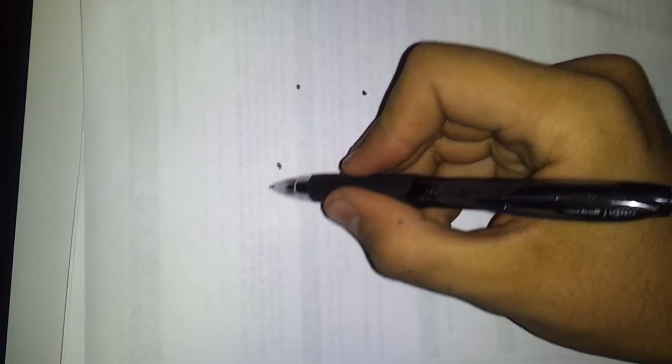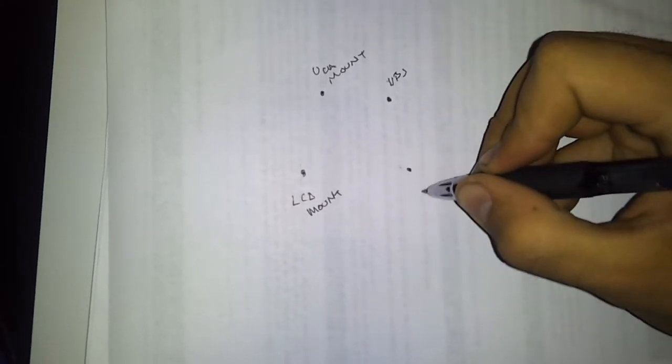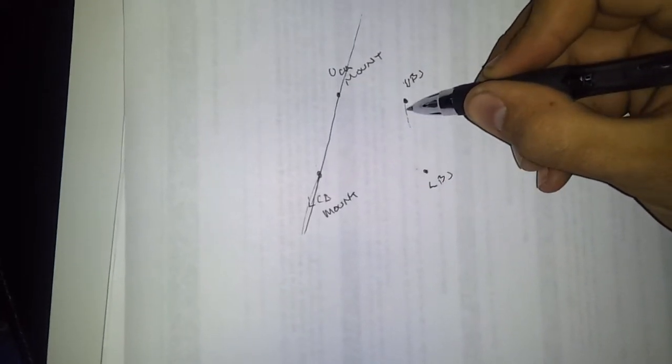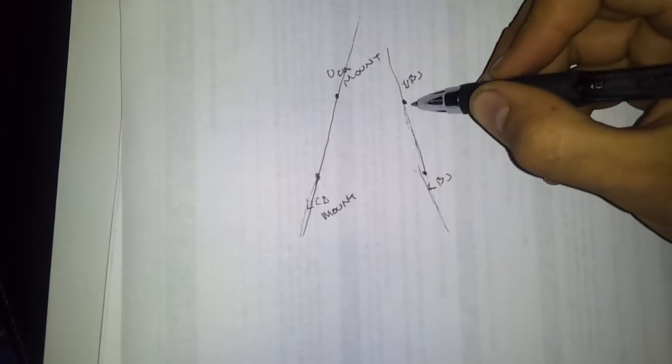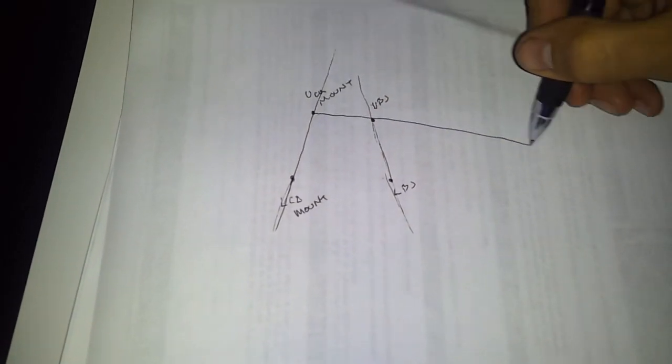Do my best to do this here. This is your lower control arm mount. This is your UCA mount. This is your upper ball joint and your lower ball joint. Now we'll make an imaginary line here, through here, and this one I'm going to have to probably do without looking at the screen. So here we go.